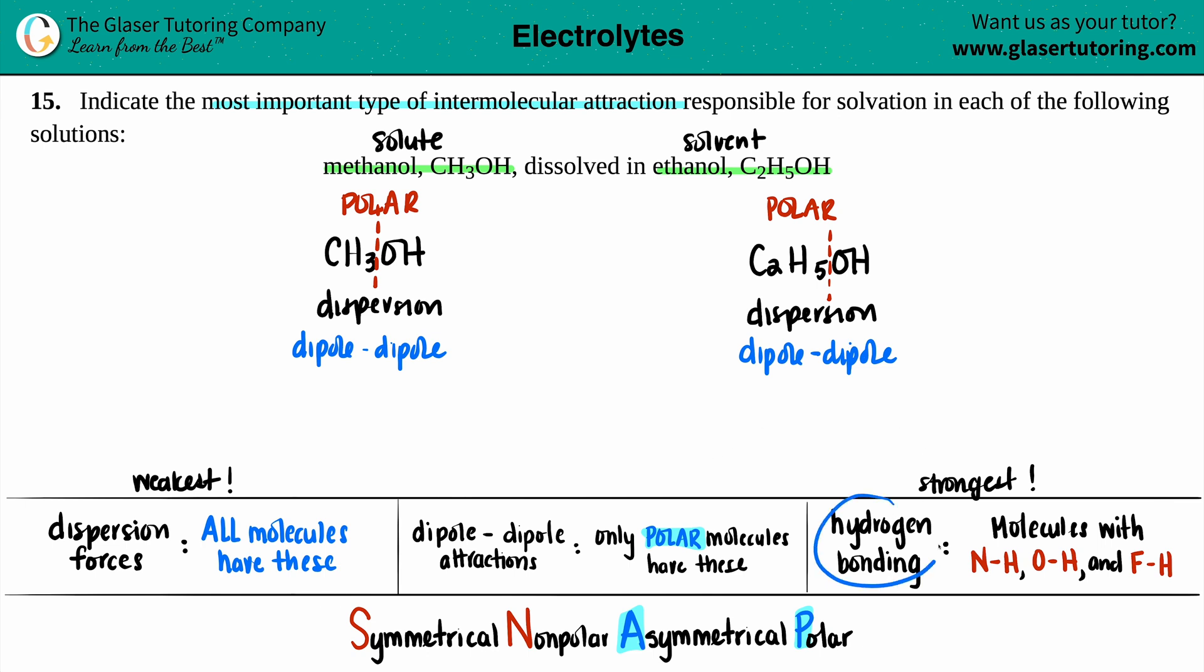Now the last thing is, do they have hydrogen bonding? Hydrogen bonding is very specific. That's why it's the strongest. Hydrogen bonding can only happen between molecules that have an NH, an OH, and an FH.